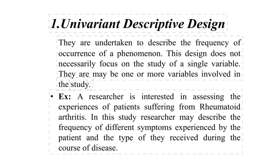Univariant descriptive research design: these are undertaken to describe the frequency of occurrence of a particular phenomenon. This design does not necessarily focus on only a single variable — you can study one or more variables. For example, a researcher assessing the experience of patients suffering from rheumatoid arthritis would look at frequency of pain, duration, what time of day pain is more (morning vs. evening), mobility restrictions, and how many times per day the patient is suffering.